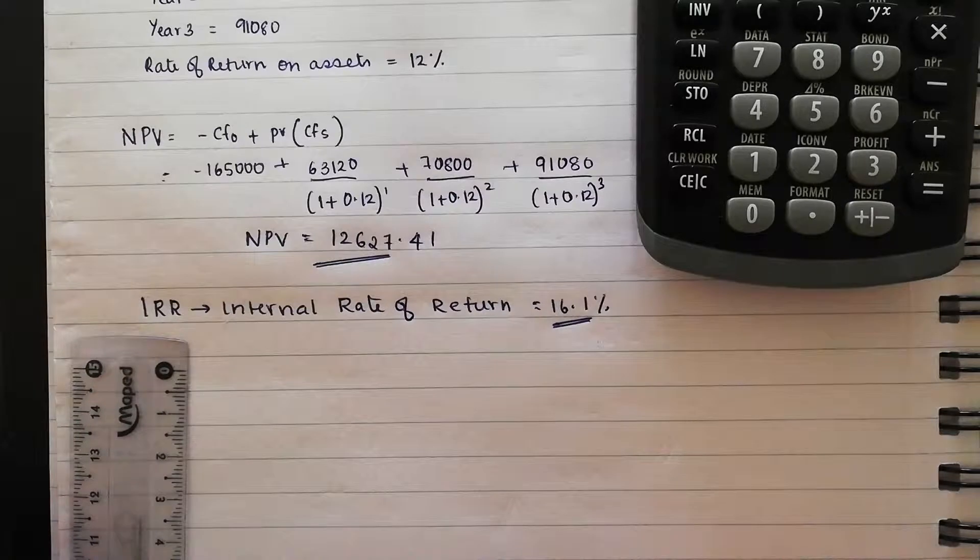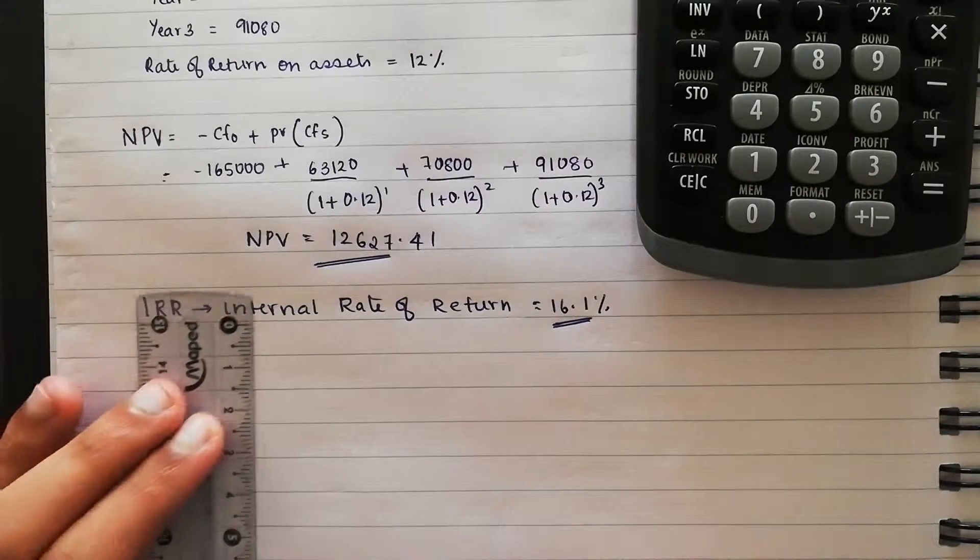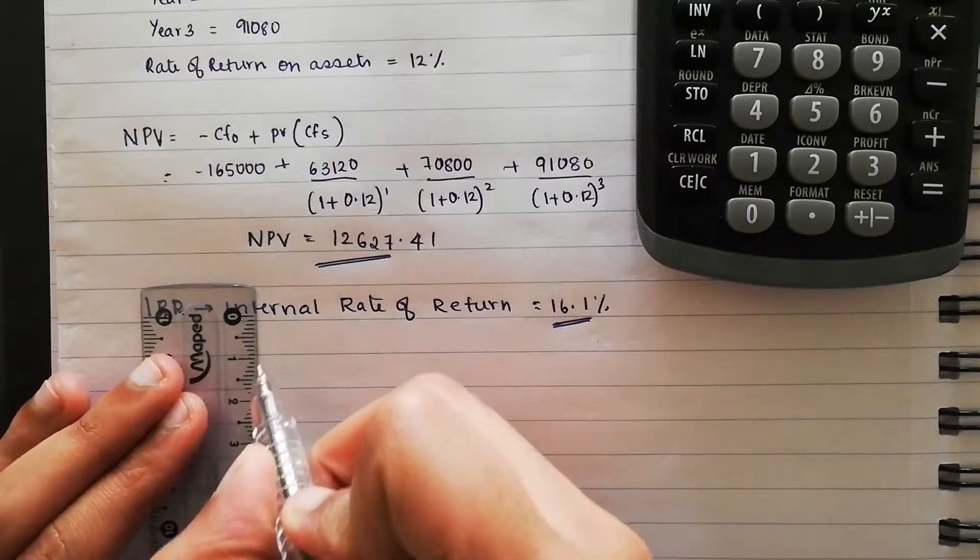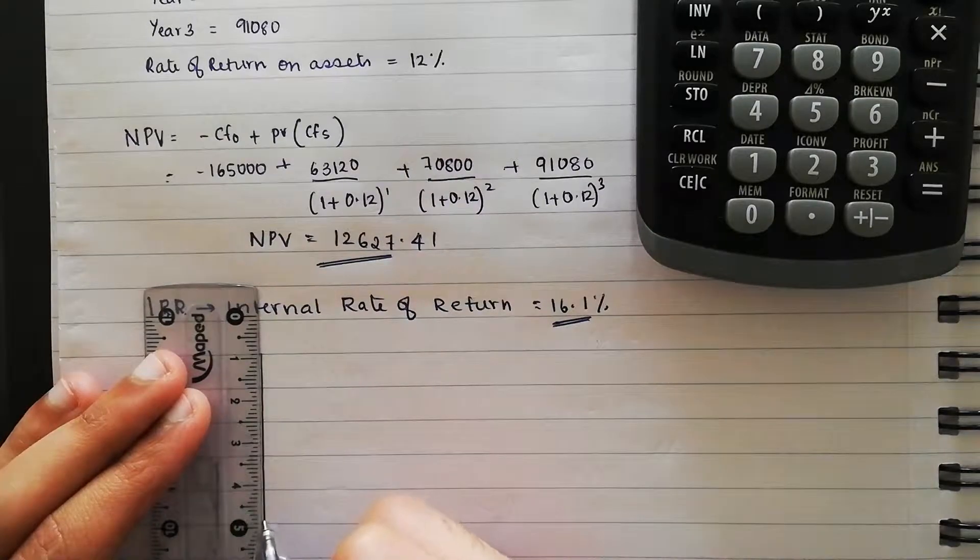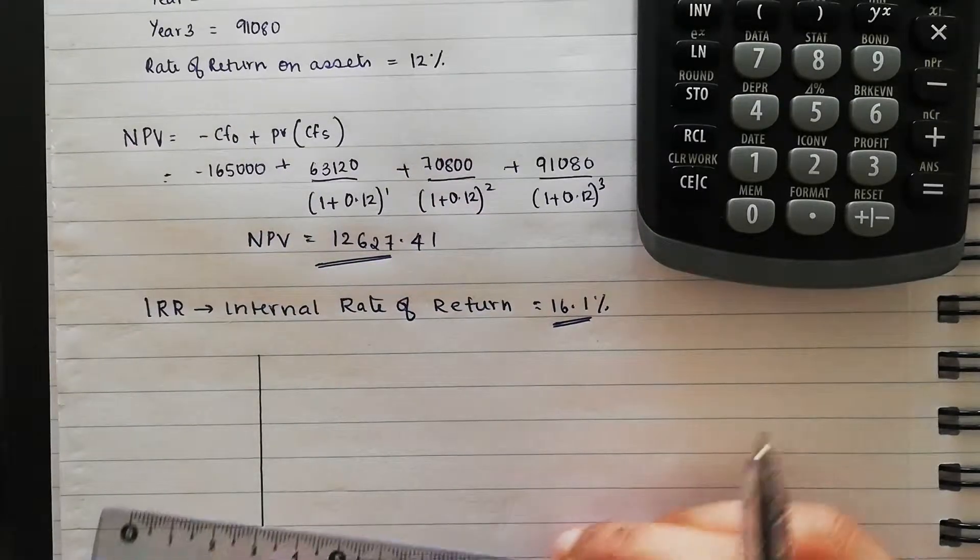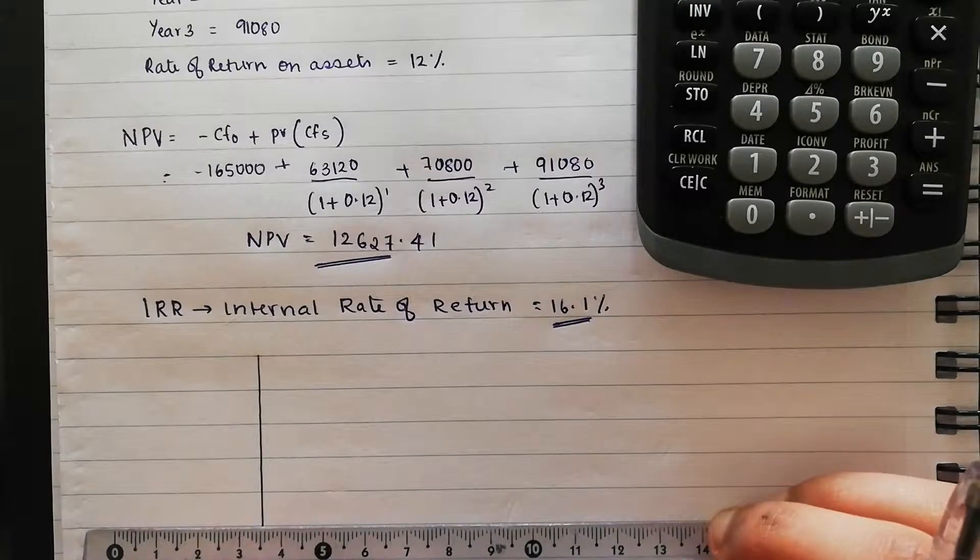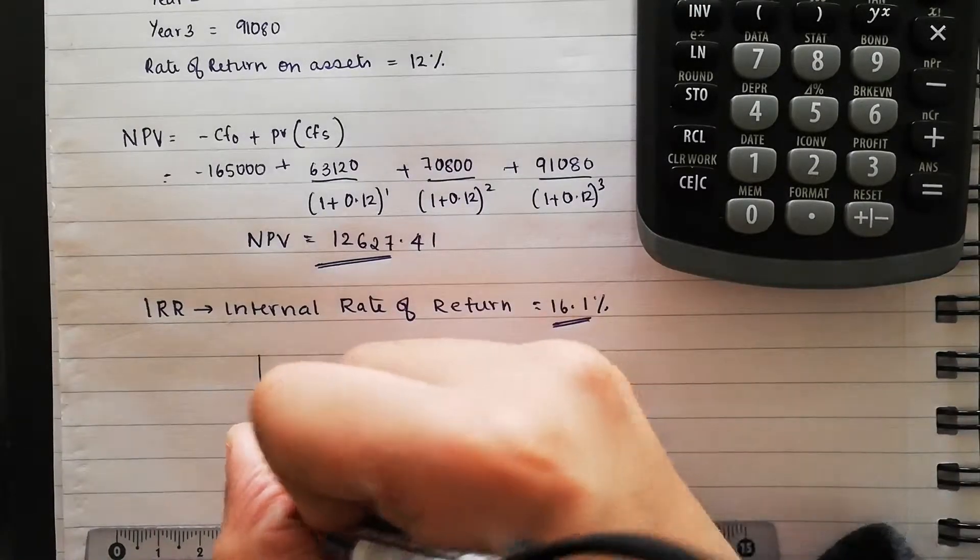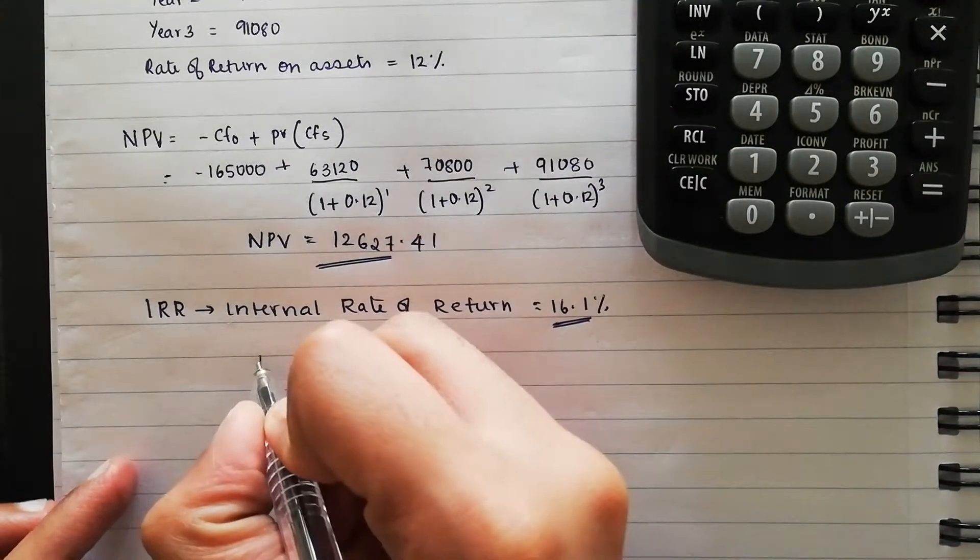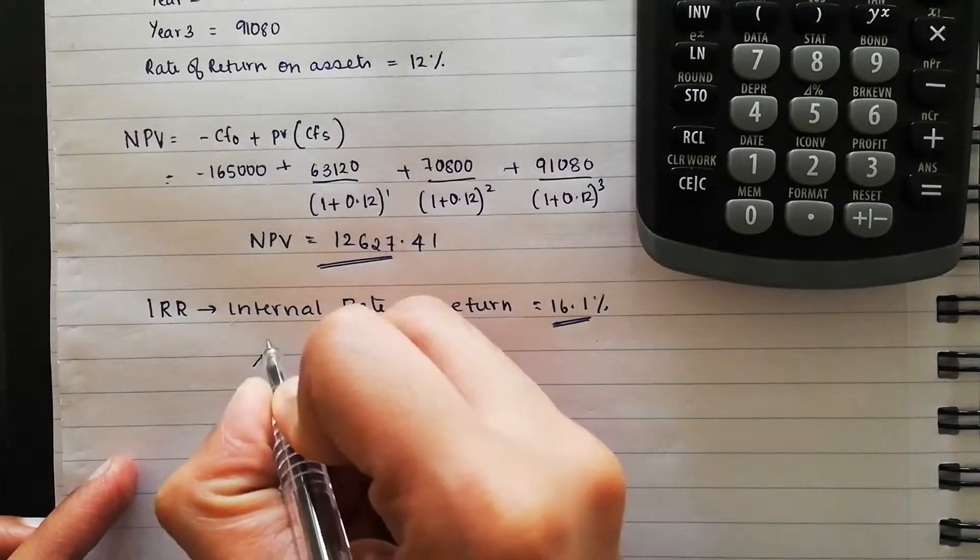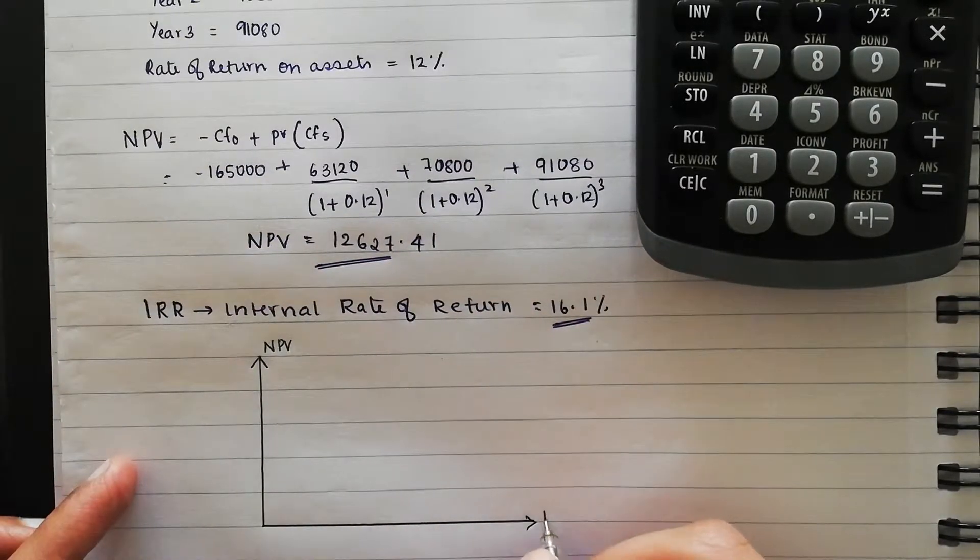And it's a graph that shows the relationship between the NPV and the discount rate. I'm going to show you how to draw one and how we can analyze the relationship between the two. So that is going to be your NPV, and that is going to be your discount rate.